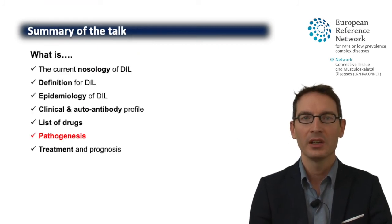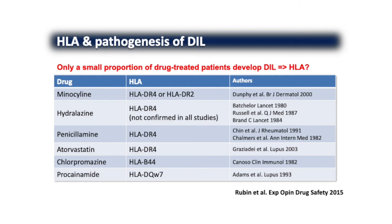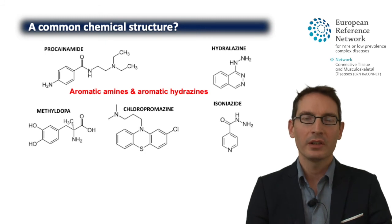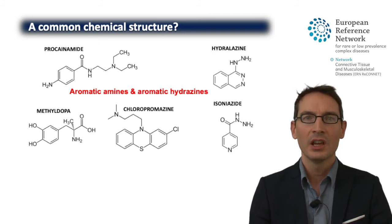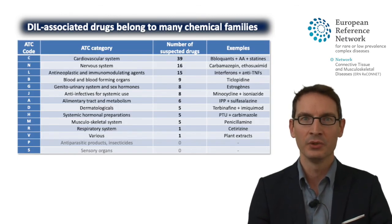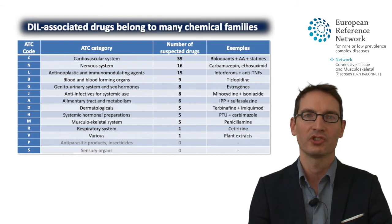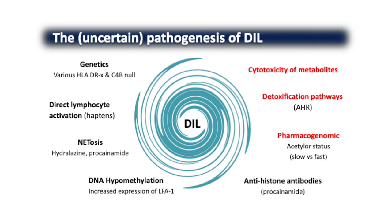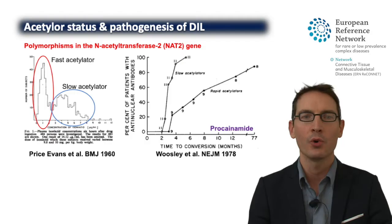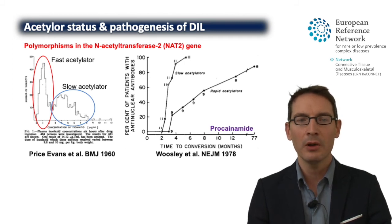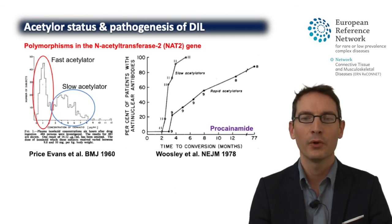Just a word about pathogenesis. One hypothesis involves a link with HLA, but there is no common HLA shared between all drugs that induce DEAL — it is just a minor risk factor. Another question is whether there is a common chemical structure, which is true for some drugs such as aromatic amines or hydrazines, but drugs that induce DEAL are found across many different pharmacological groups. Most studies point to the cytotoxicity of the metabolite, especially involving detoxification pathways and pharmacogenetics. One example is the slow acetylator pattern, which is a very strong risk factor for procainamide-induced DEAL.